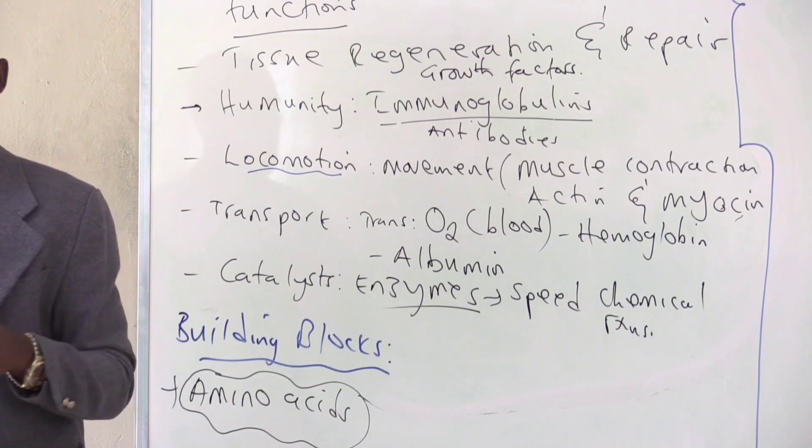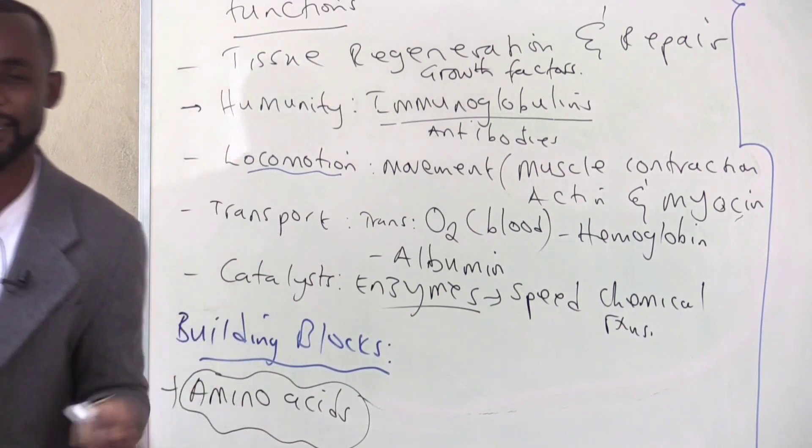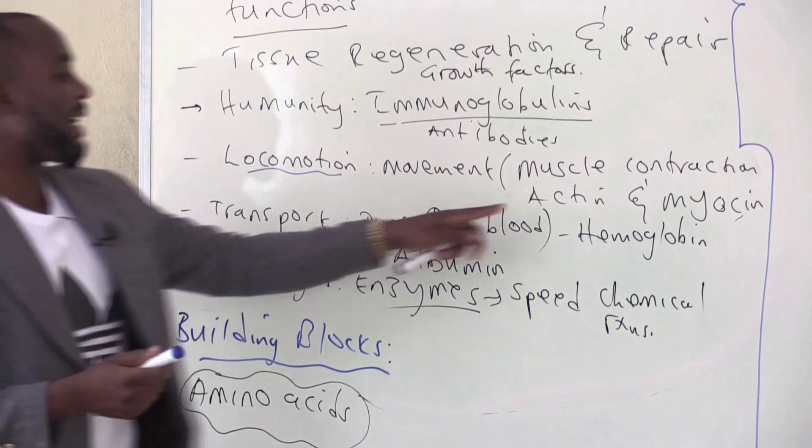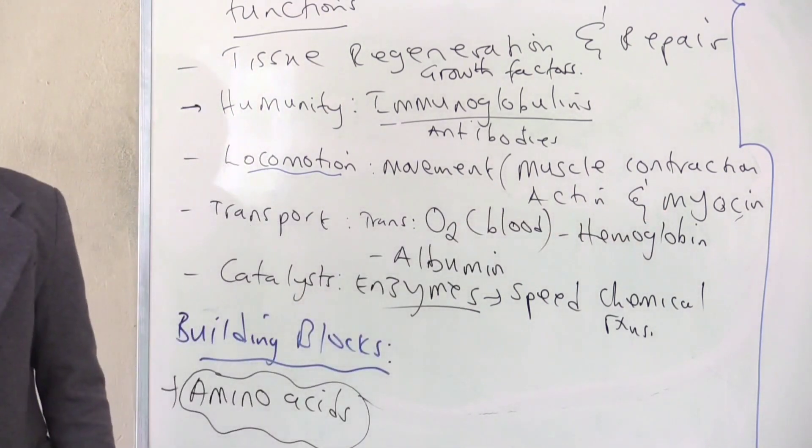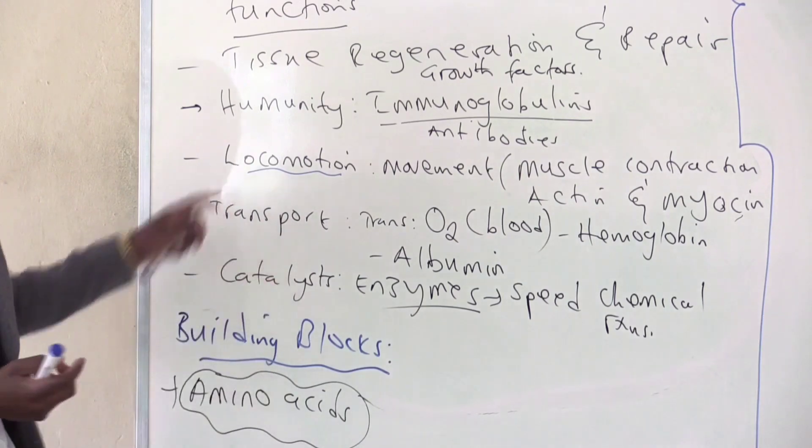In physiology, the lecturer has explained to you the formation of what is called a sarcomere with the help of actin and myosin. So actin and myosin are examples of proteins that we use in locomotion.